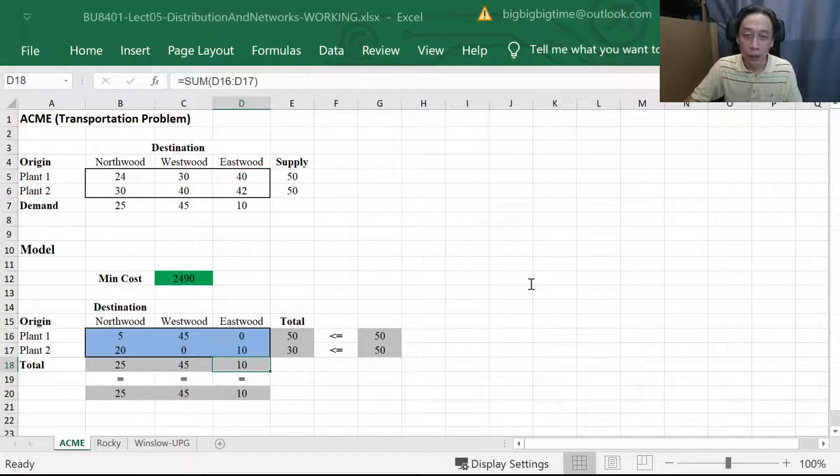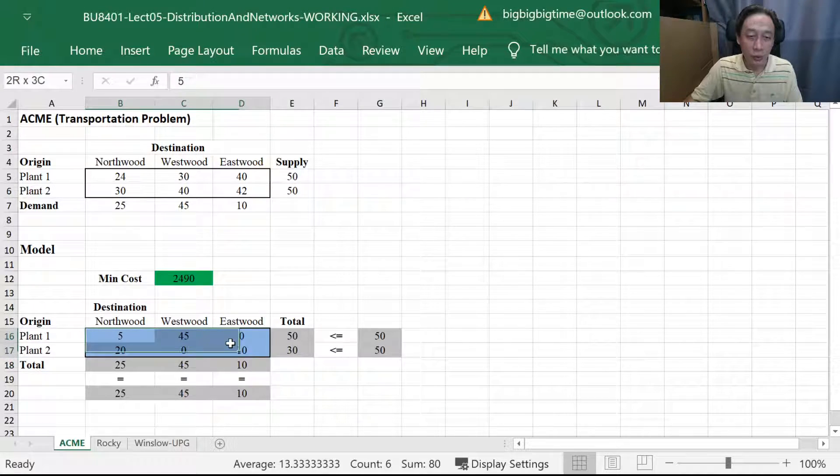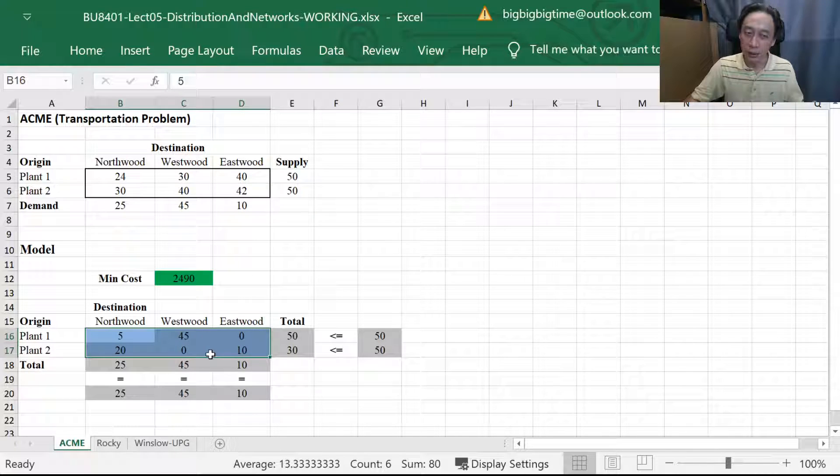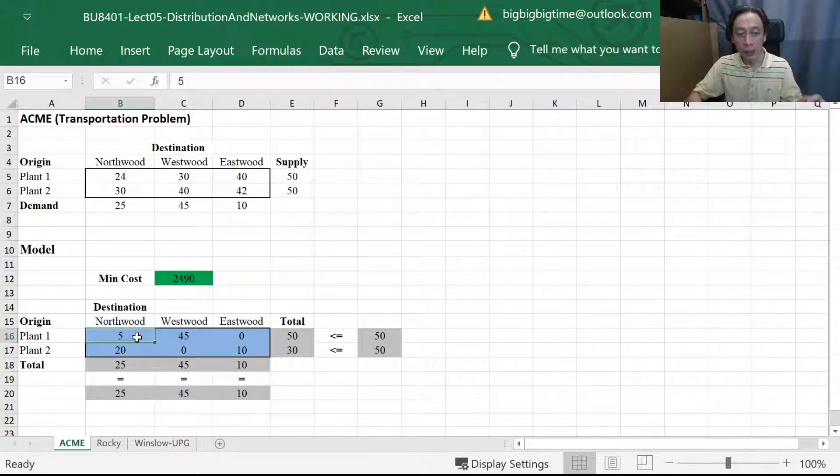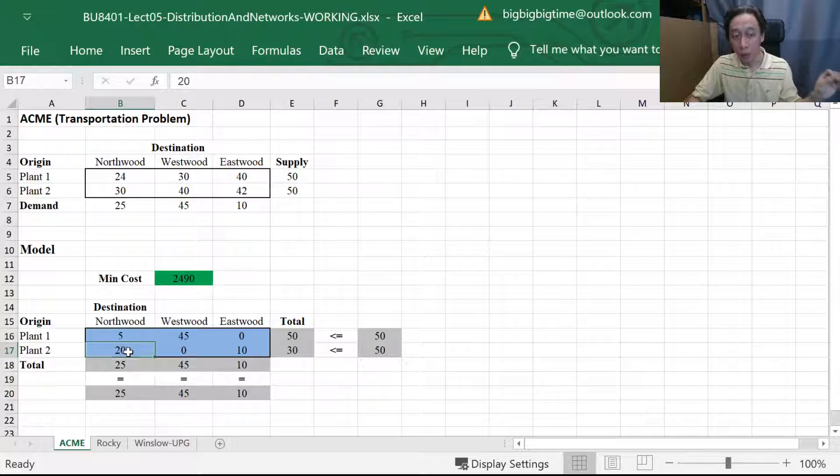Okay now we should check that the ignore integer constraints is not set. Once we do that we find that we have an integer solution and this solution is like that.